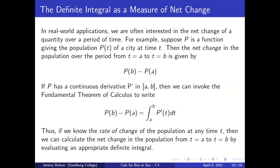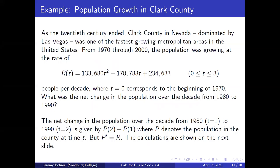The definite integral as a measure of net change. In real-world applications, we are often interested in the net change of a quantity over a period of time. For example, suppose P is a function giving the population P(t) of a city at time t. Then the net change in the population over the period from t = a to t = b is P(b) minus P(a). If P has a continuous derivative P' on [a, b], then by the fundamental theorem, P(b) − P(a) = the integral from a to b of P'(t) dt. Thus, if we know the rate of change of the population at any time t, we can calculate the net change by evaluating an appropriate definite integral.